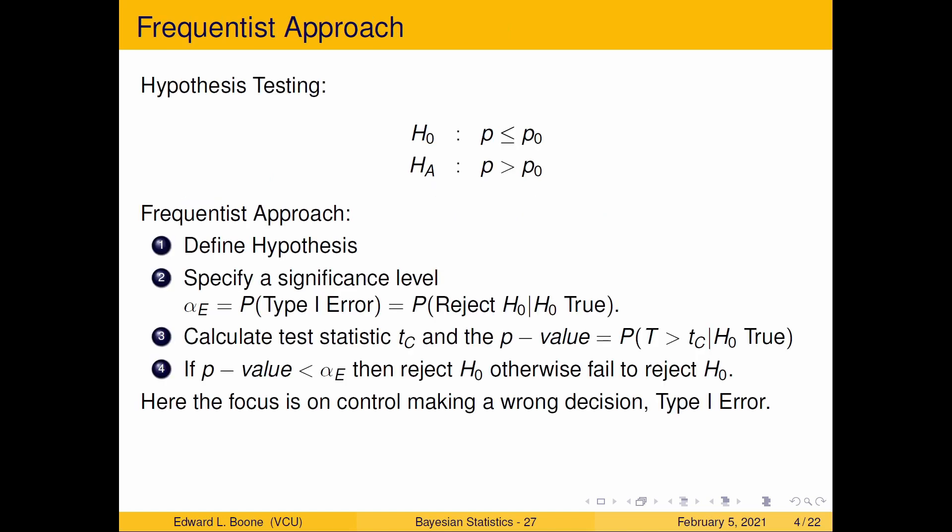Let's quickly look over the frequentist approach. Here I've got a one-sided hypothesis. Define the hypothesis, specify a significance level alpha. This is the probability of a type one error, the probability that you would reject H naught when H naught is true. This is basically how often am I willing to be wrong in the type one sense.